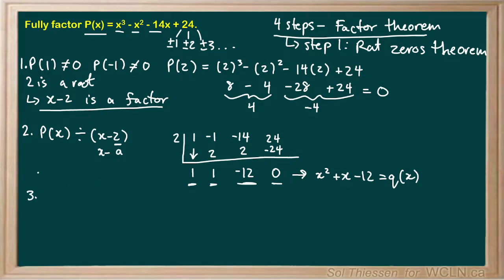So step 3 is to repeat this process until our quotient is quadratic. In this case, our quotient already is quadratic. So I'm just going to write it again.